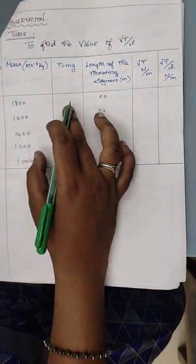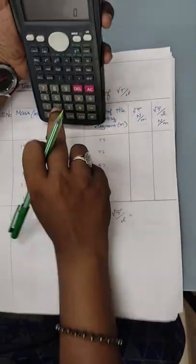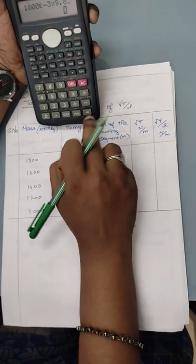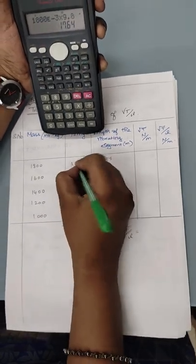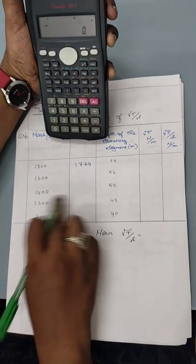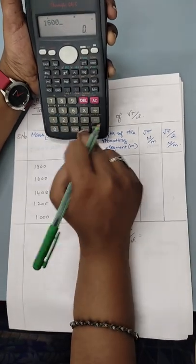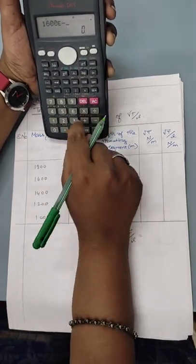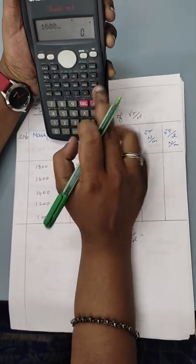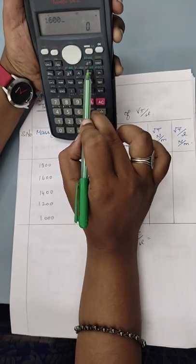Let's find T. T is equal to M times g, mass is going to be 1800 exponential of minus 3 into 9.8g. So we get 17.64. So likewise for 1600, 1400, we need to put 1600 exponential of minus 3.